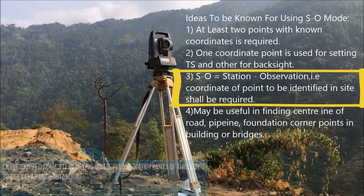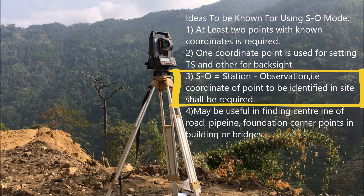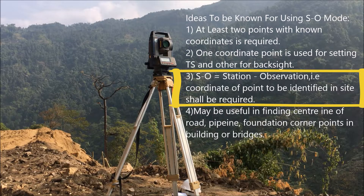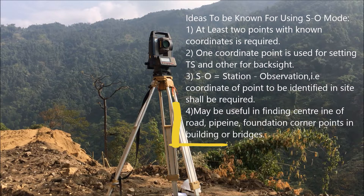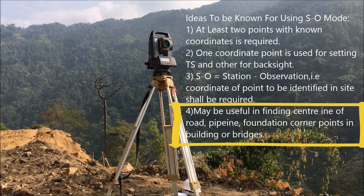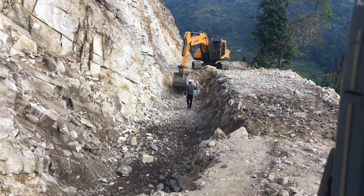The third point is SO — that is Station Observation mode. The coordinate of the point to be identified in the site is required. For example, if you have to find point A in the field, the coordinate of that point A should be known and entered into the instrument, then targeted using a prism or non-reflective mode. This function may be useful for finding the center line of a road, pipeline, foundation, corner points of a building, or bridges. Here I'm using the SO mode in my project for finding the center line of a pipe.